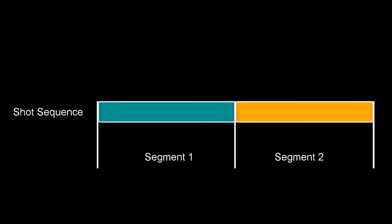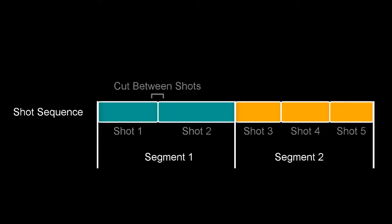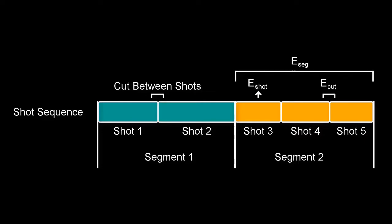We formulate shot selection, ordering, and cutting as a hybrid shot optimization problem. The hybrid optimization jointly considers shot-wise, cut-wise, and segment-wise energy terms and efficiently solves the problem using dynamic programming.